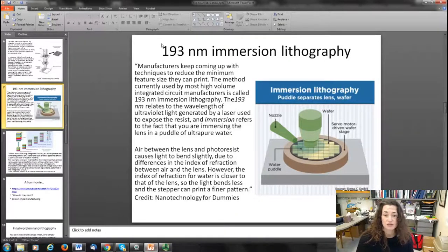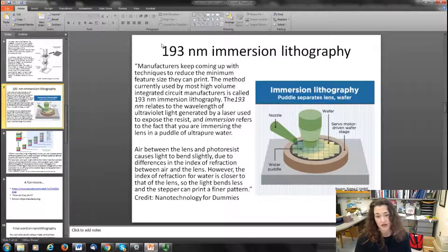Air between the lens and the photoresist actually causes the light to bend slightly due to differences in the index of refraction between air and the lens, but the index of refraction for water is closer to that of the lens, so the light bends less and the stepper can print a finer pattern.